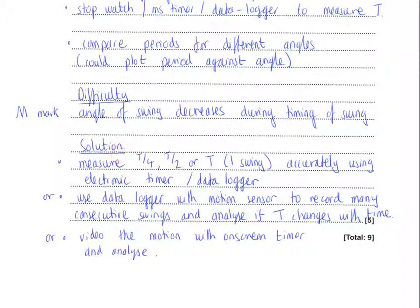And the solution is to have a timing method that allows you to measure either a quarter or a half, or at most, one swing, and the time corresponding to that. And so you need to be using an electronic timer or a data logger. So if you referred to a stopwatch earlier, you can still get the mark for knowing what you need to time, but you absolutely do need an electronic timer or a data logger here.